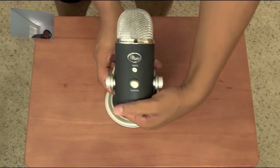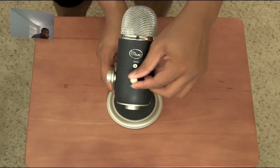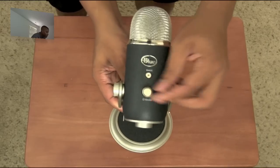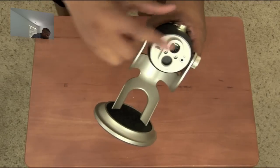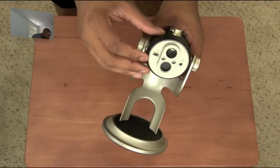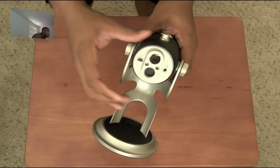On the back here we do have a mute button and also a volume rocker, volume knob there. And on the bottom you'll find the XLR output and then you'll find the headphone jack too.